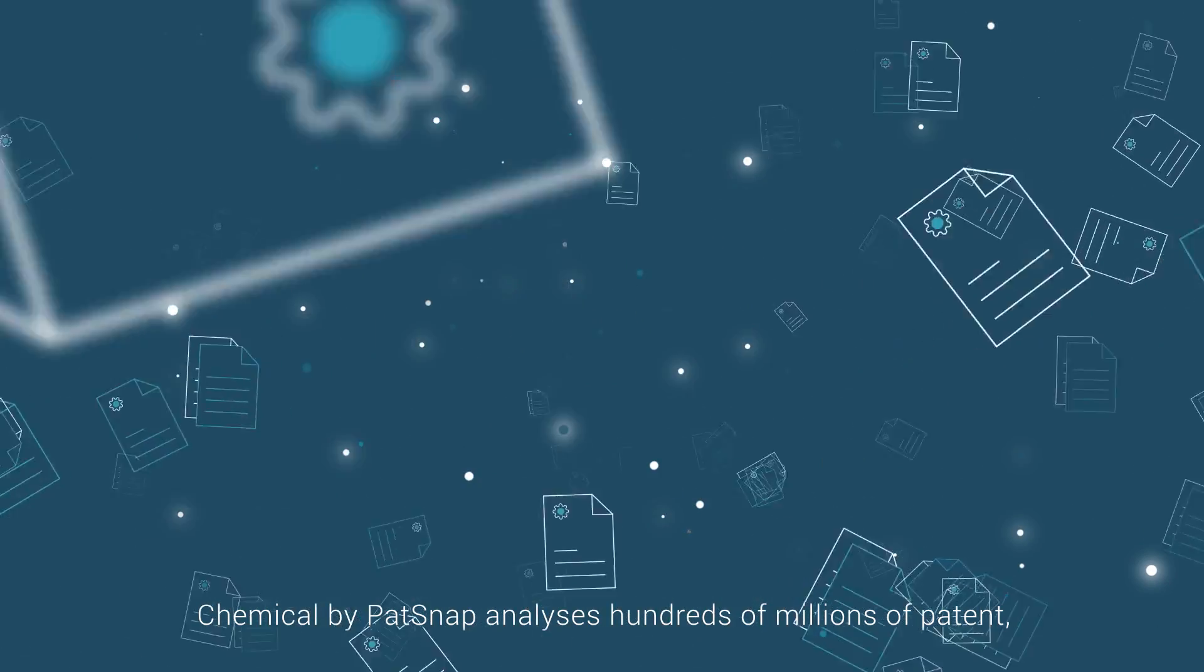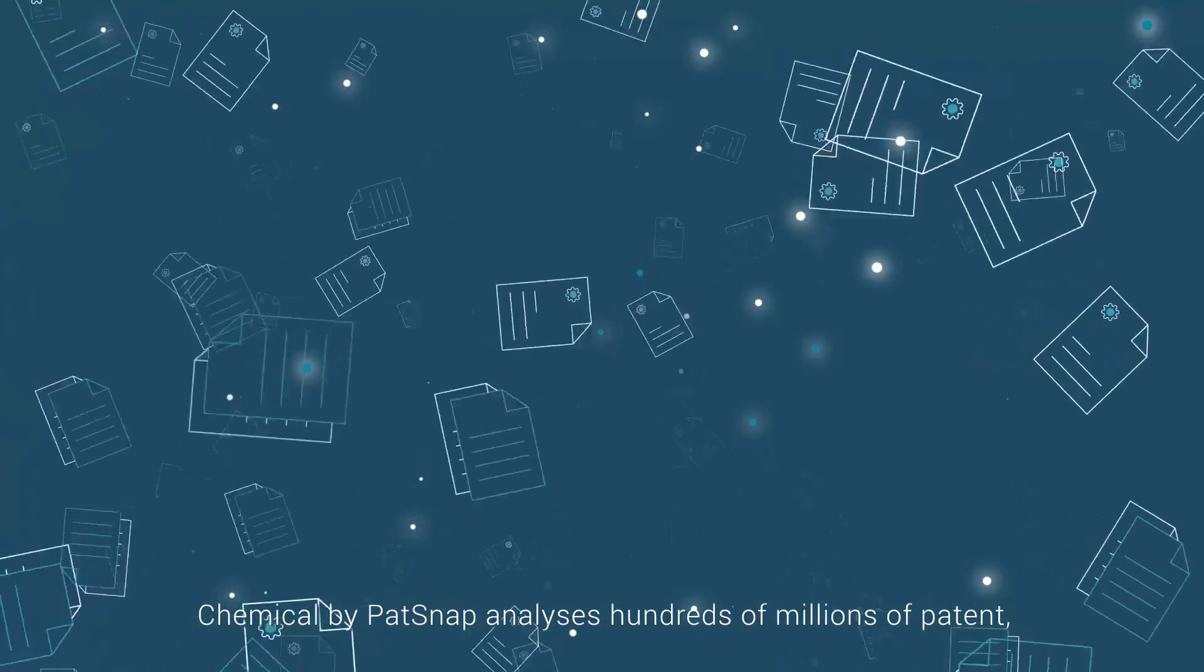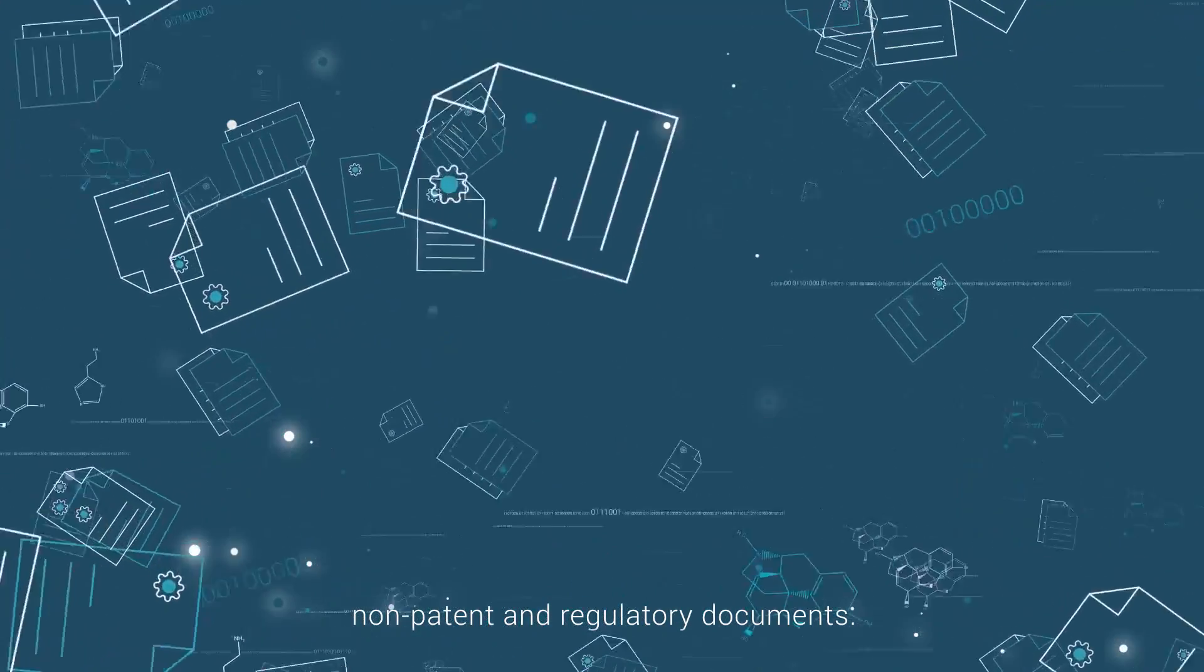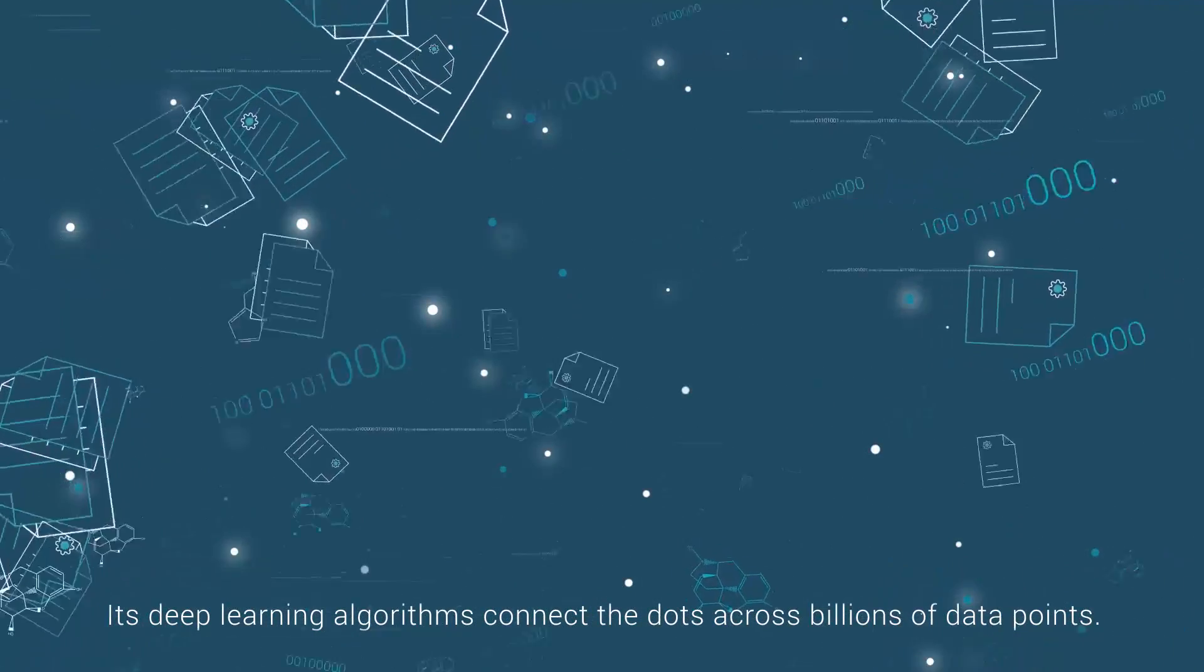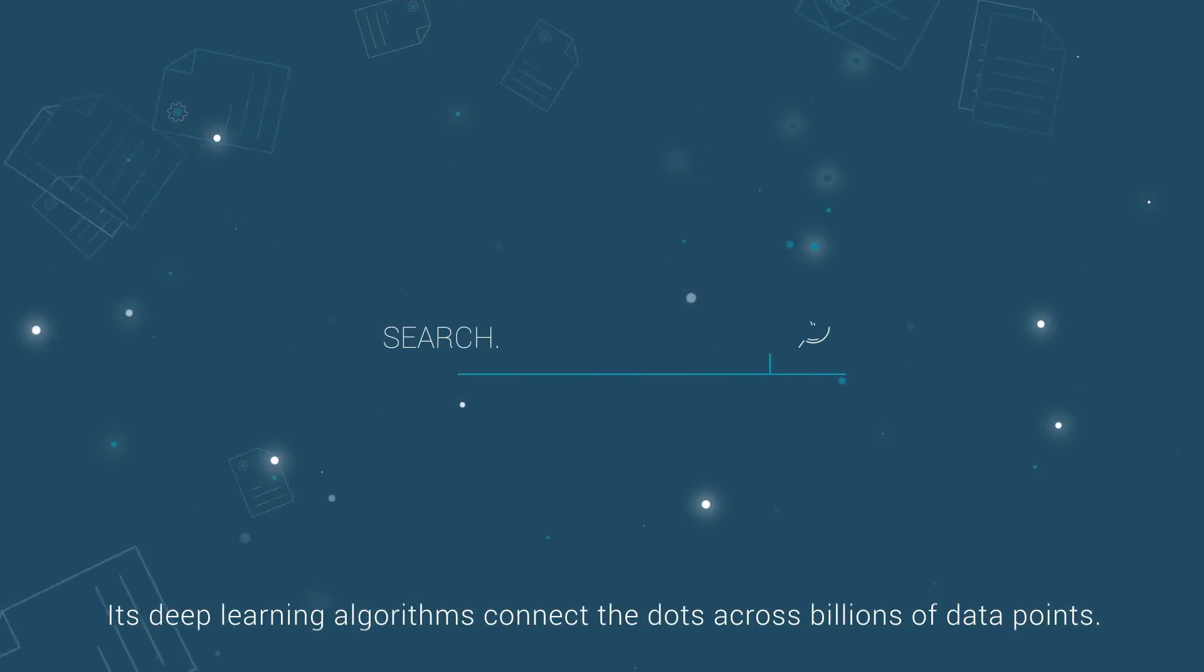Chemical by Patsnap analyses hundreds of millions of patent, non-patent, and regulatory documents. Its deep learning algorithms connect the dots across billions of data points.